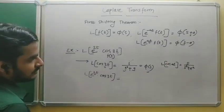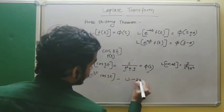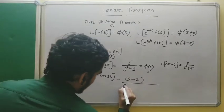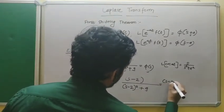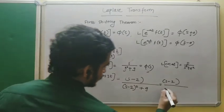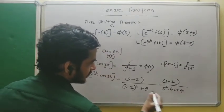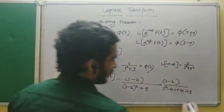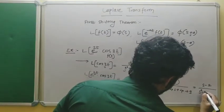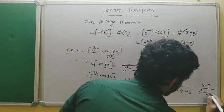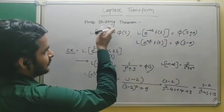So the Laplace transform of e^(2t)·cos(3t) becomes (s-2)/((s-2)²+9). Expanding (s-2)² using a²-2ab+b², we get s²-4s+4, and adding 9 gives s²-4s+13. So the final answer is (s-2)/(s²-4s+13). That is the step-by-step procedure to apply the first shifting theorem.